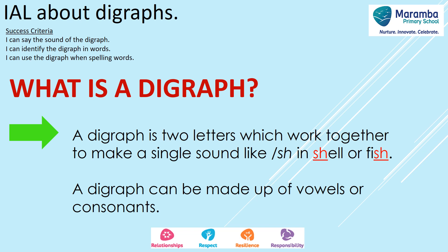A digraph can be made up of vowels or consonants. Remembering that a vowel is a, e, i, o, and u — and the consonants are all the other letters in the alphabet.